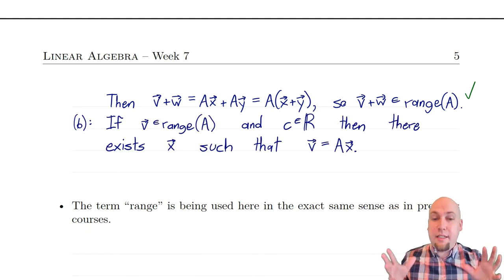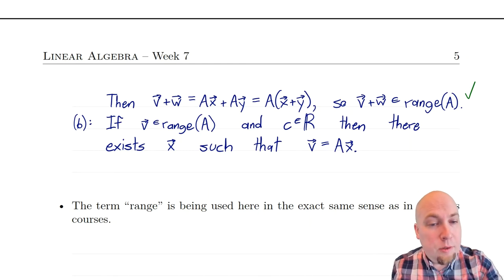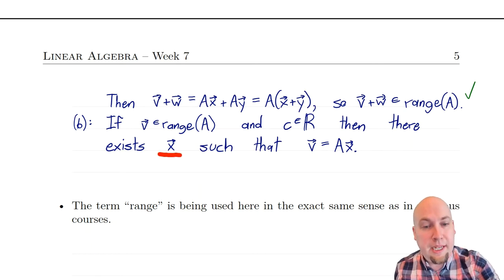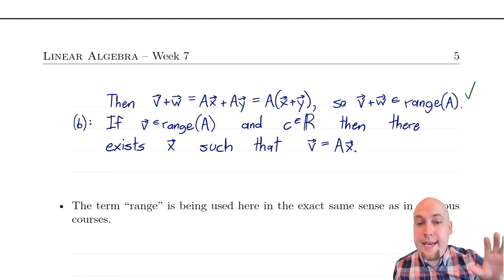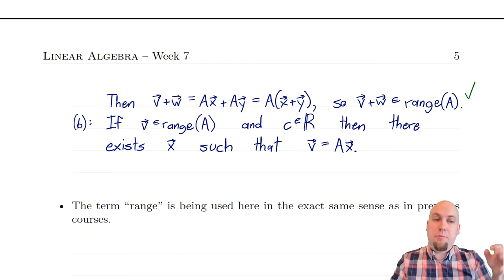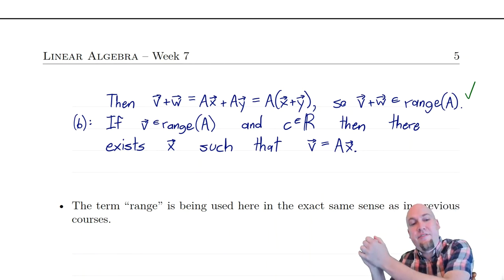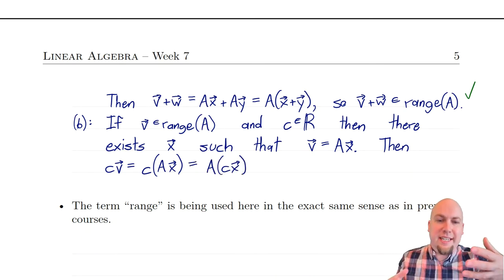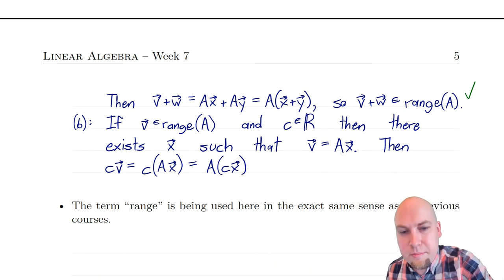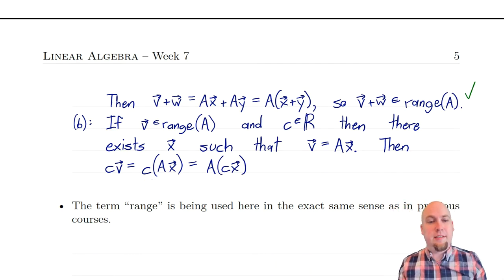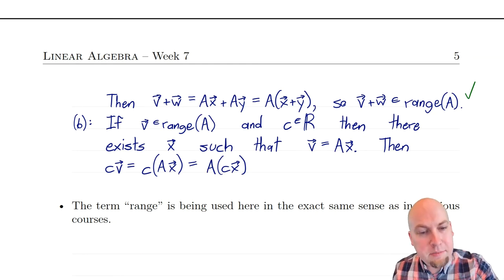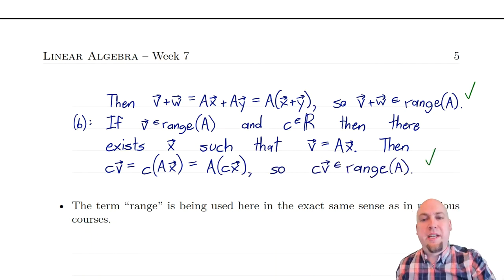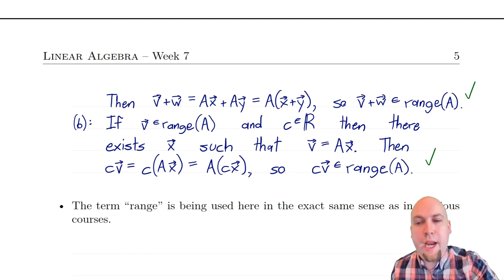Property B: if V is in the range, there exists an input x such that Ax equals V. We want to show cV is also in the range. Note that cV equals c times Ax, and we can absorb c inside to get A times (cx). So A times (cx) equals cV, meaning cV is in the range. Since both properties A and B are satisfied, the range is also a subspace.